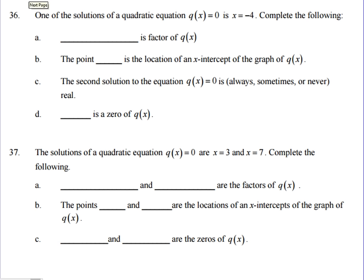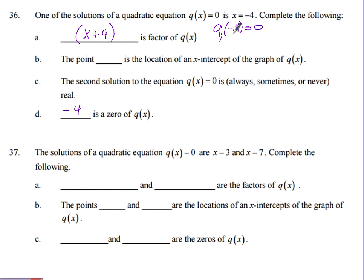One solution of a quadratic equation q(x) equals 0 is x equals negative 4. This means negative 4 is a zero of q, the factor is (x plus 4), and the x-intercept is the point (negative 4, 0).